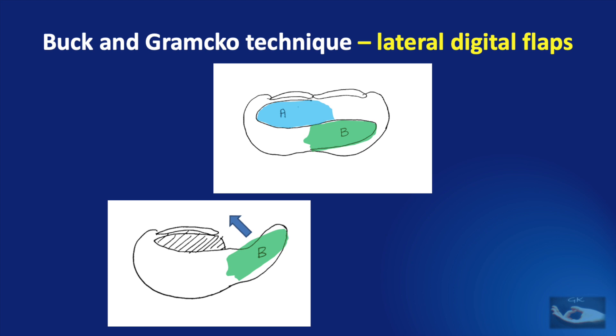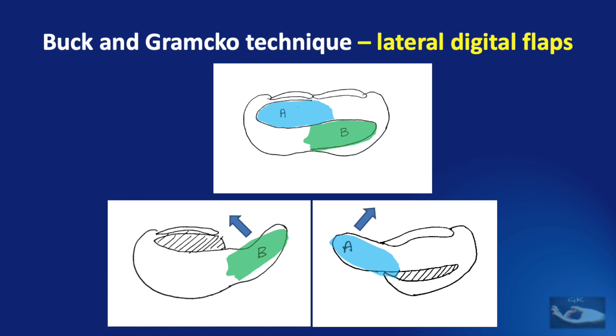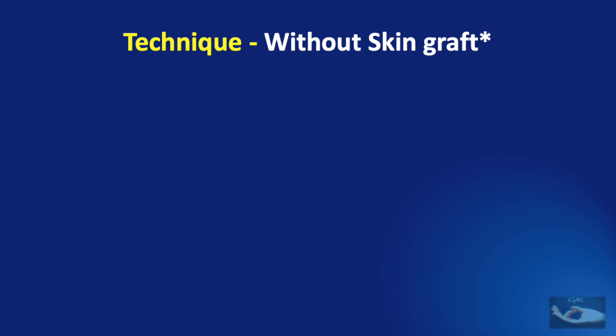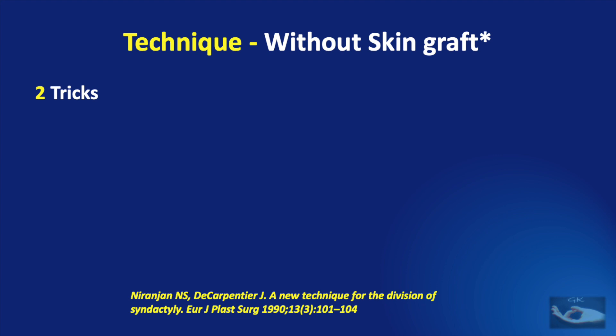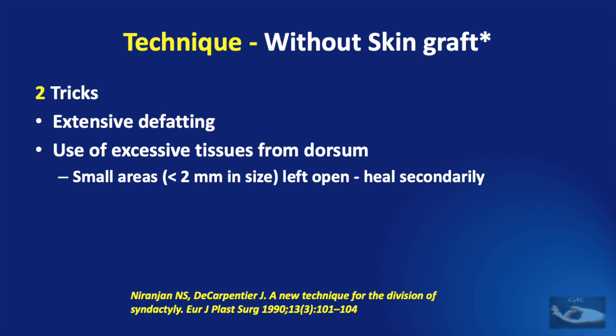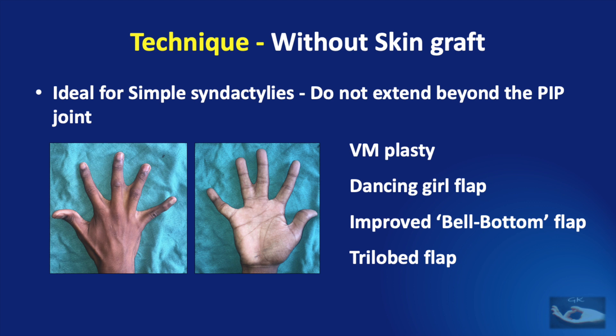Some techniques of syndactyly release have been described without using skin grafts. The basic technique was described by Niranjan and De Carpentier in 1990, involving two principles: first, extensive defatting, and second, use of excess tissues from the dorsum while leaving less than two millimeter raw areas open to heal by secondary intention. These techniques are ideal for release of simple syndactyly that does not extend beyond the PIP joint. Techniques such as the VM plasty, the dancing girl flap, the improved bell-bottom flap, and the trilobe flap have been described.